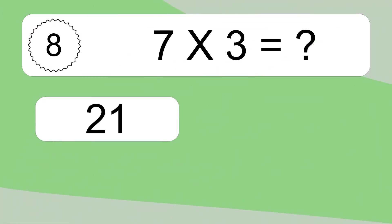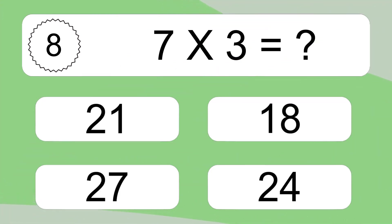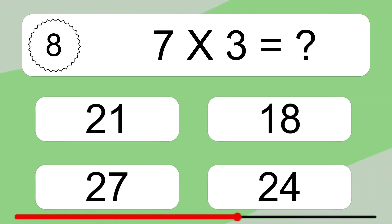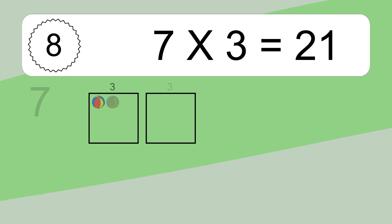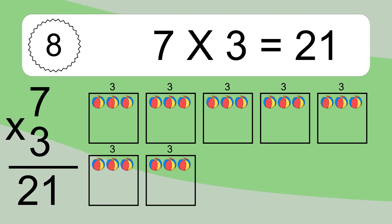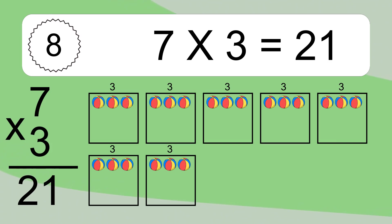Seven times three equals what? Seven times three equals twenty-one. We have seven boxes, and each box has three colorful balls inside. If you count all the balls in all the boxes together, you will have seven times three balls. This equals twenty-one balls.